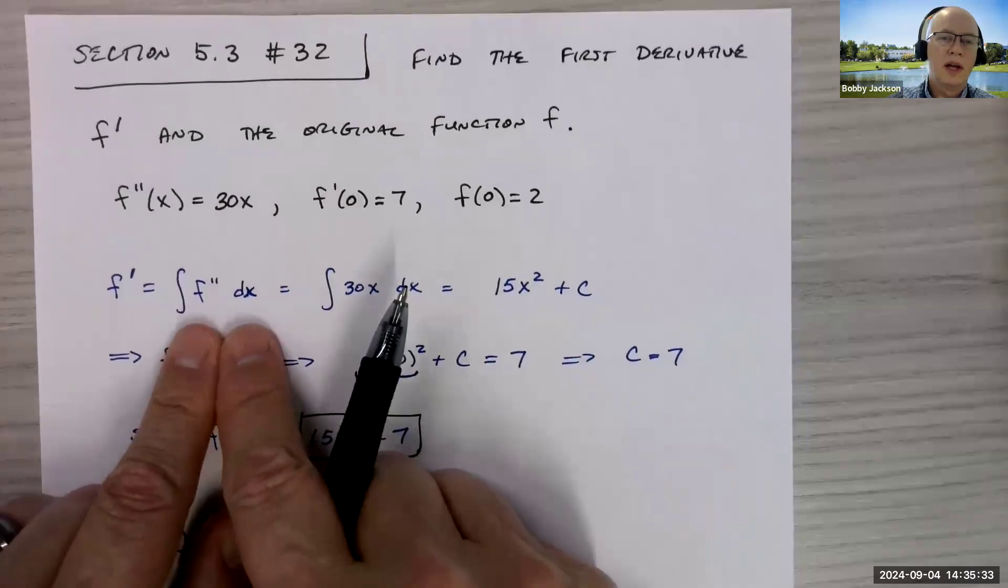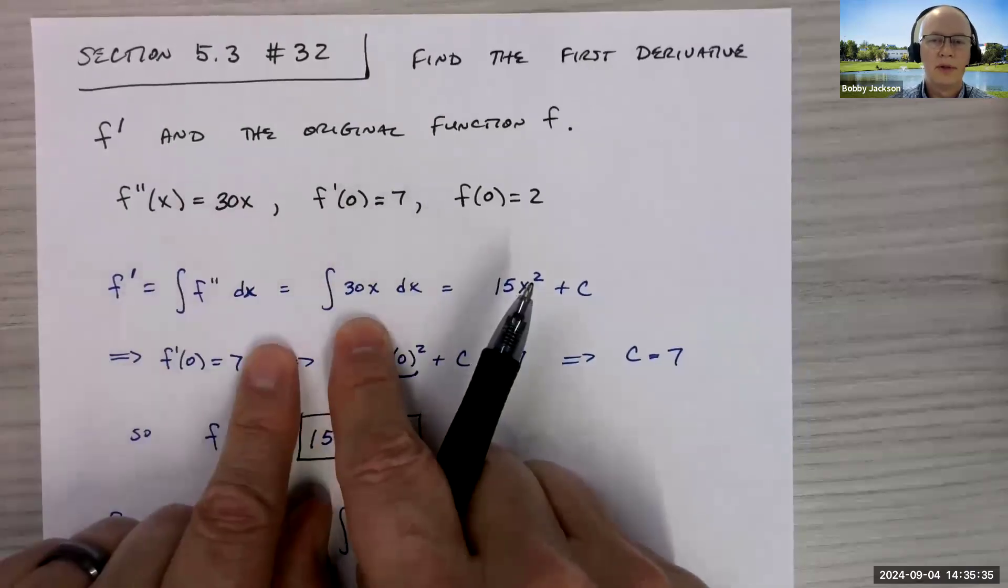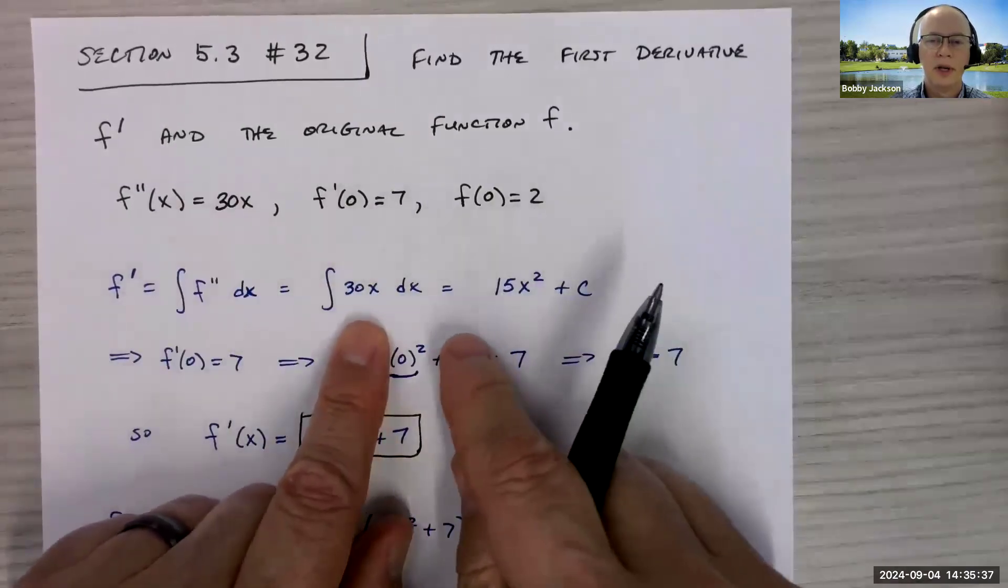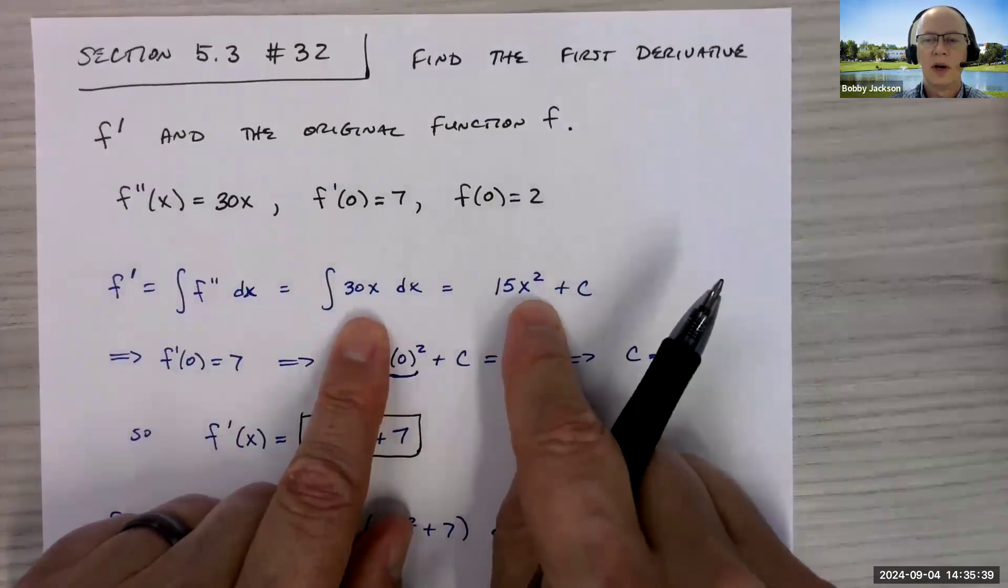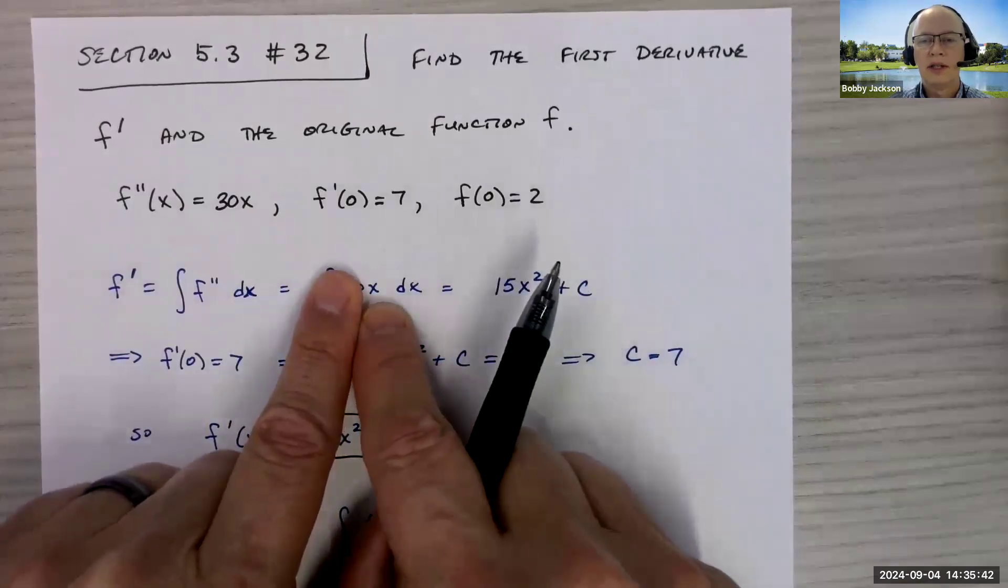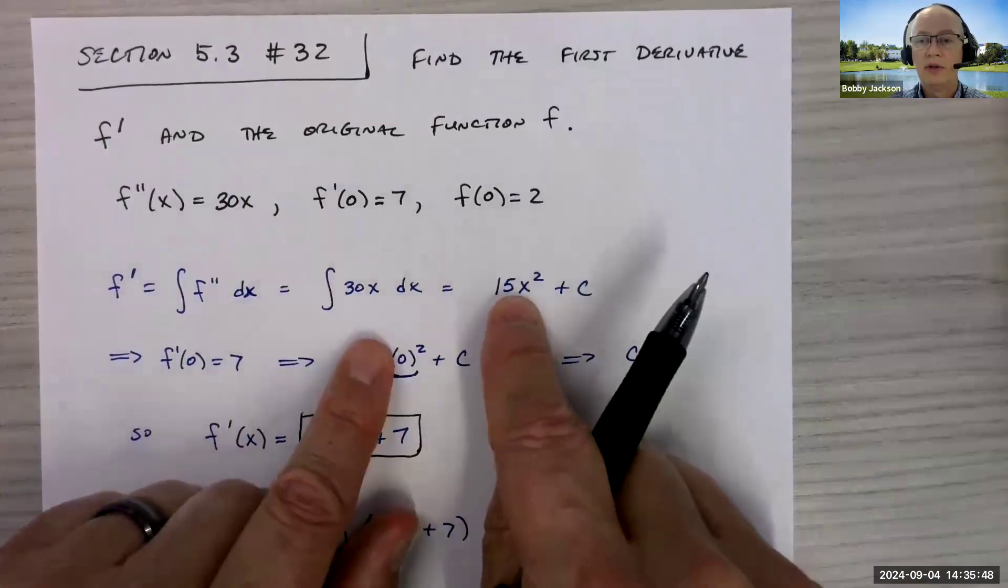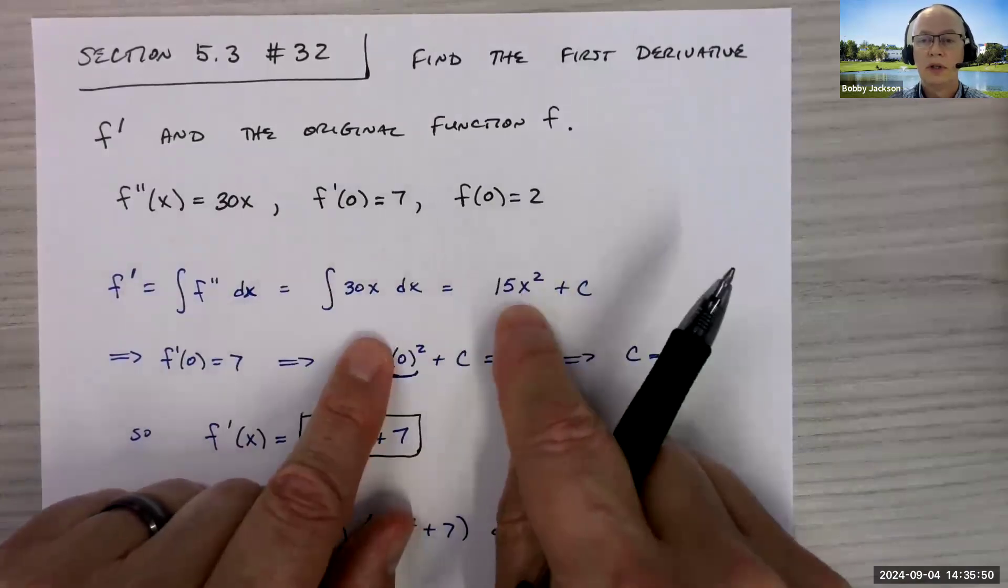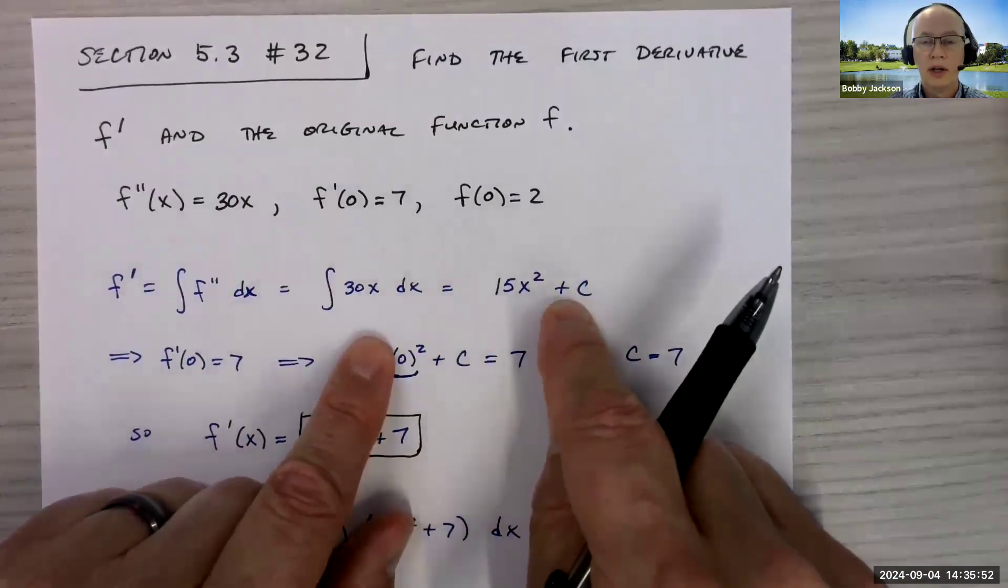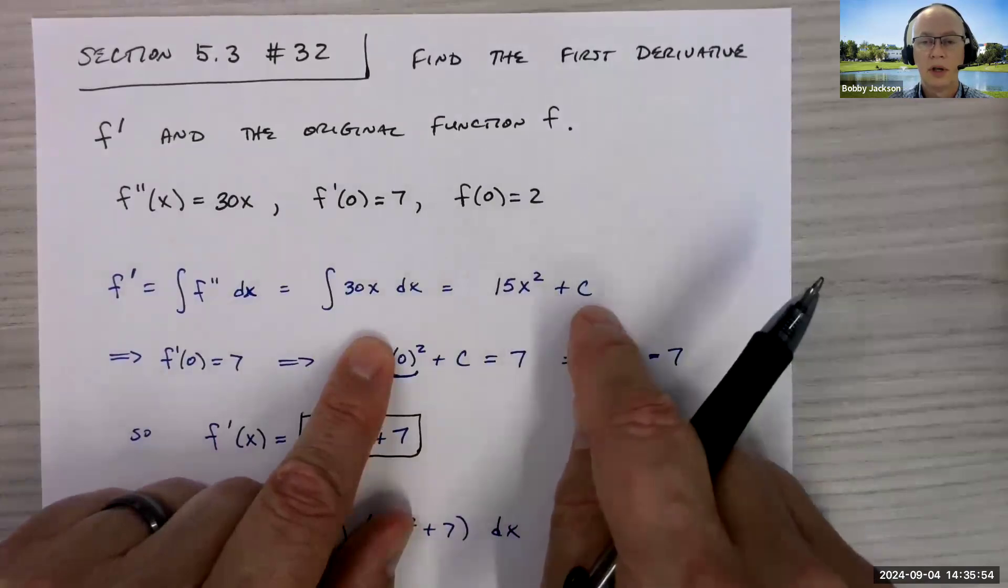Okay, so when we integrate f double prime, I'm just integrating 30x. What's the antiderivative of 30x? Well, it's 15x squared. So keep in mind, 30 is a constant multiple. The antiderivative of x would be x squared divided by two, but 30 divided by two is 15. So hopefully you see that's the antiderivative and don't forget your plus c, your arbitrary constant of integration.